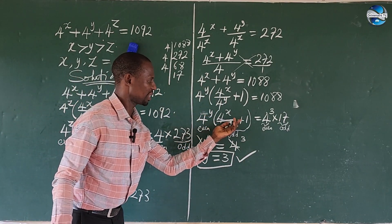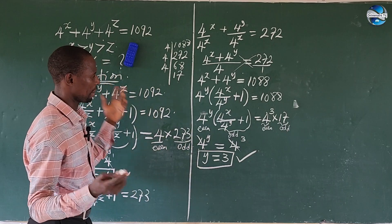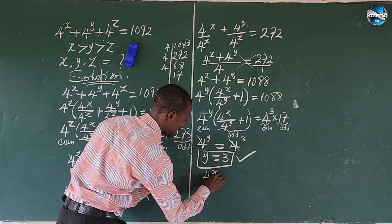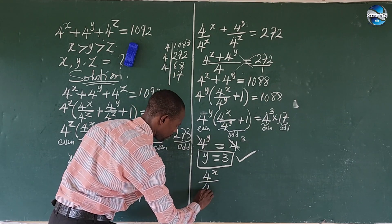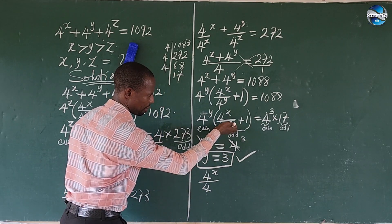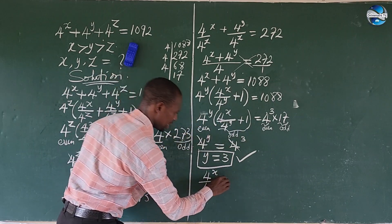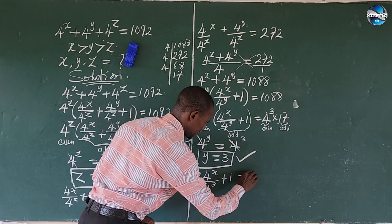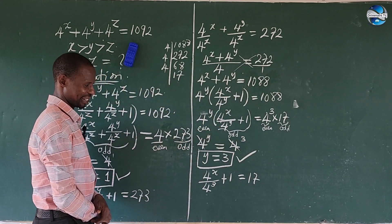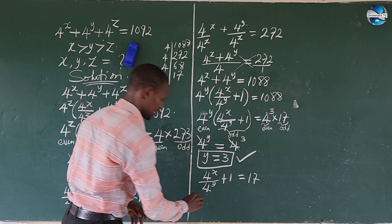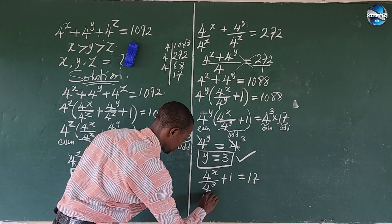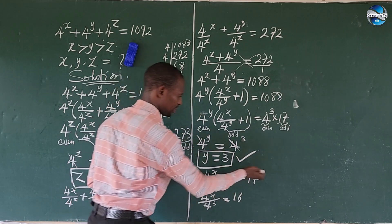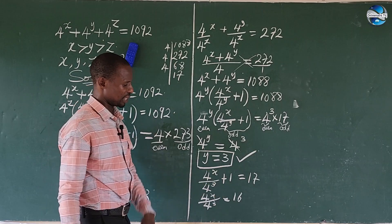So we have gotten y to be 3. Now to find x, all we need to do is substitute our values. We have 4 to the power of x all over 4 to the power of 3, plus 1, equals 17. Moving the 1 to the other side gives us 4 to the power of x all over 4 to the power of 3, equals 16.